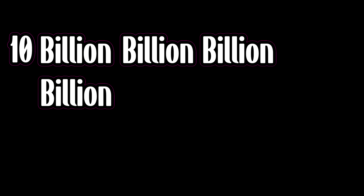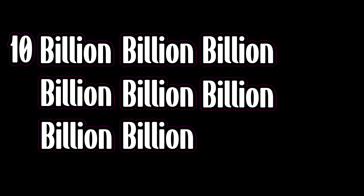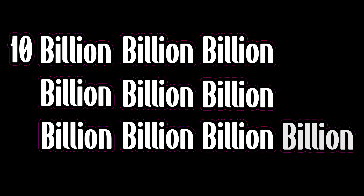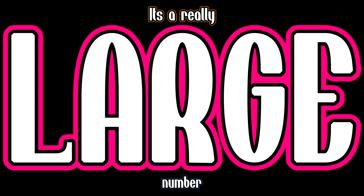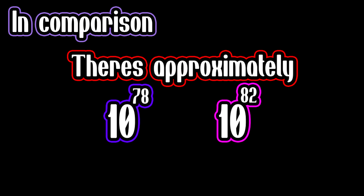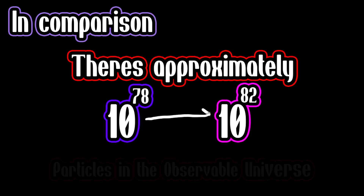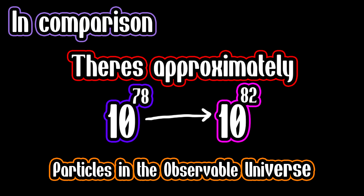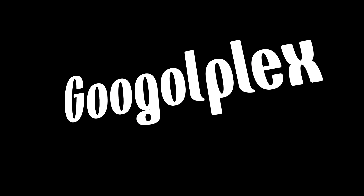A Googol is 10 billion billion billion billion billion billion billion billion billion billion — or a one with a hundred zeros after it. It's a really large number. To put that into perspective, it's approximated that there are about 10 to the 78 to 10 to the 82 particles in the observable universe.